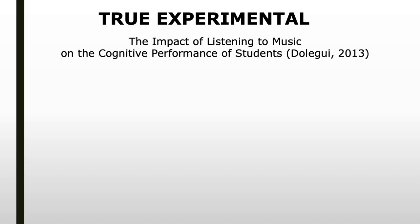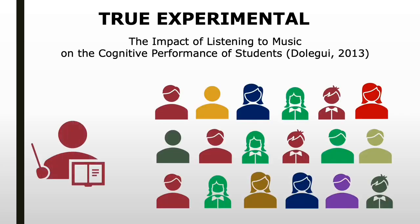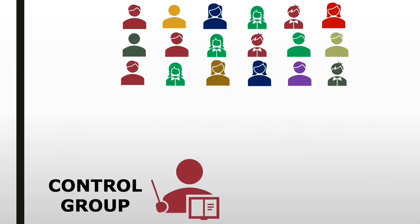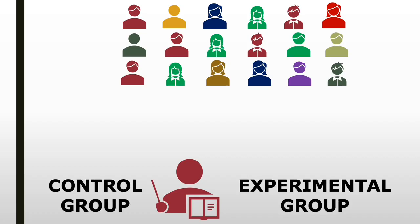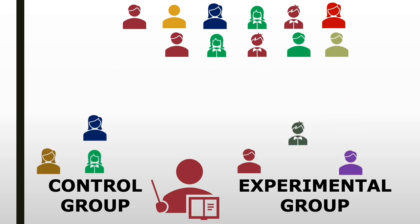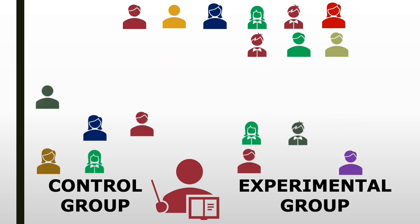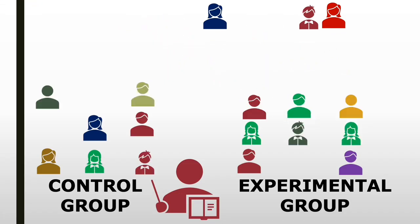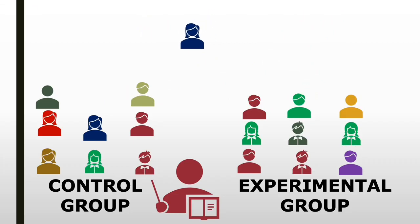Let us consider this example for a true experimental research. The teacher is interested in determining the impact of listening to music on the cognitive performance of the students. In this example, the researcher must first establish a control group and an experimental group. Second, the participants must be assigned in a random manner. Randomization is a characteristic of a true experimental research design to ensure that both groups, the experimental and the control group, are relatively similar.